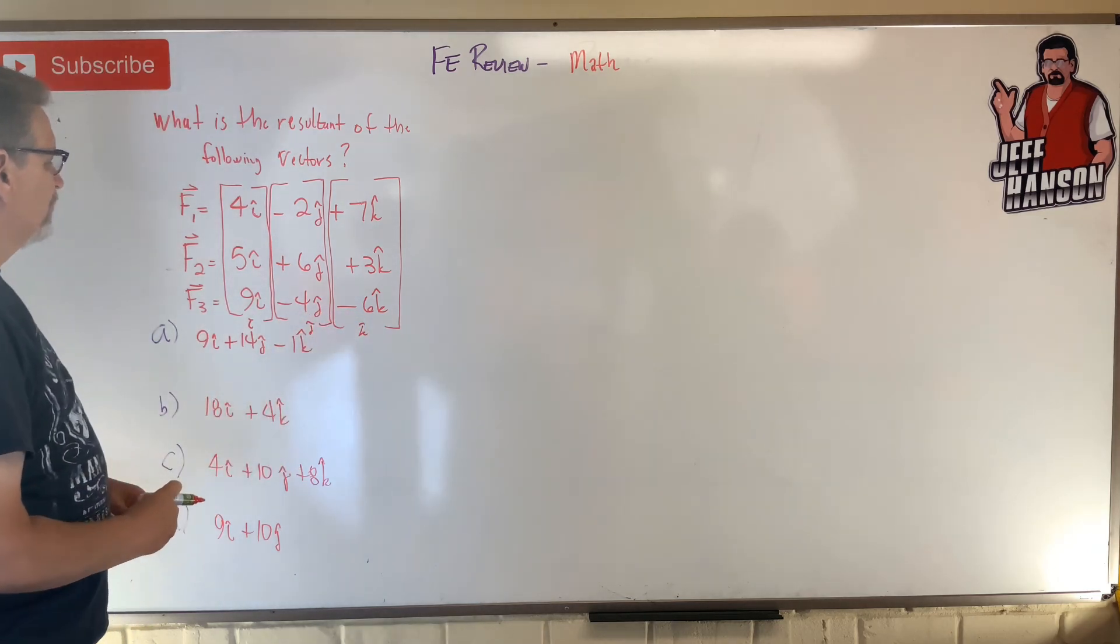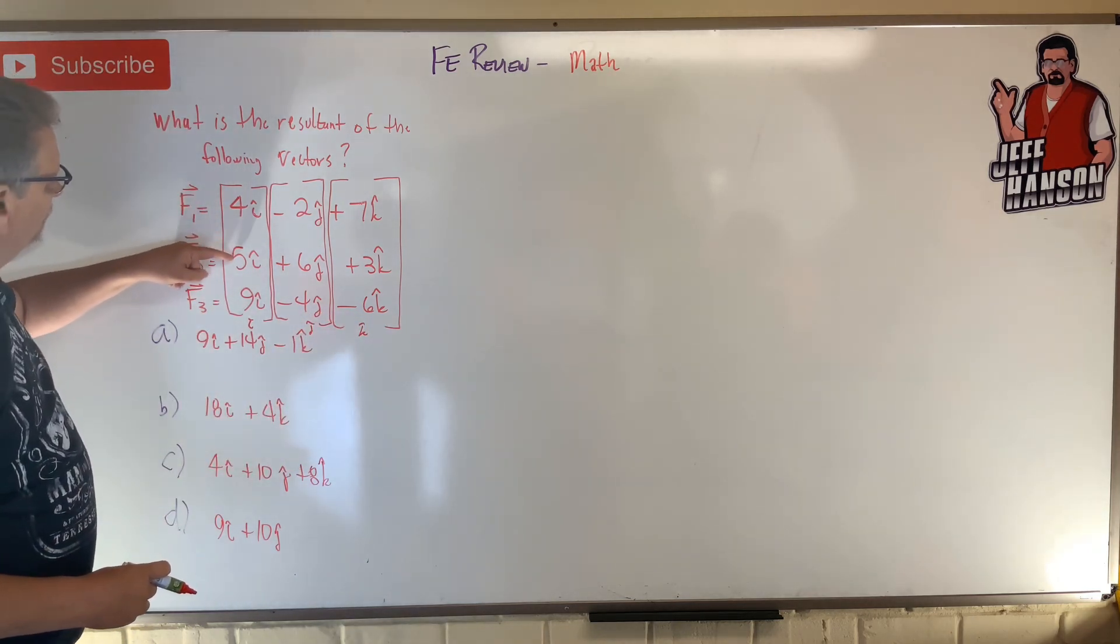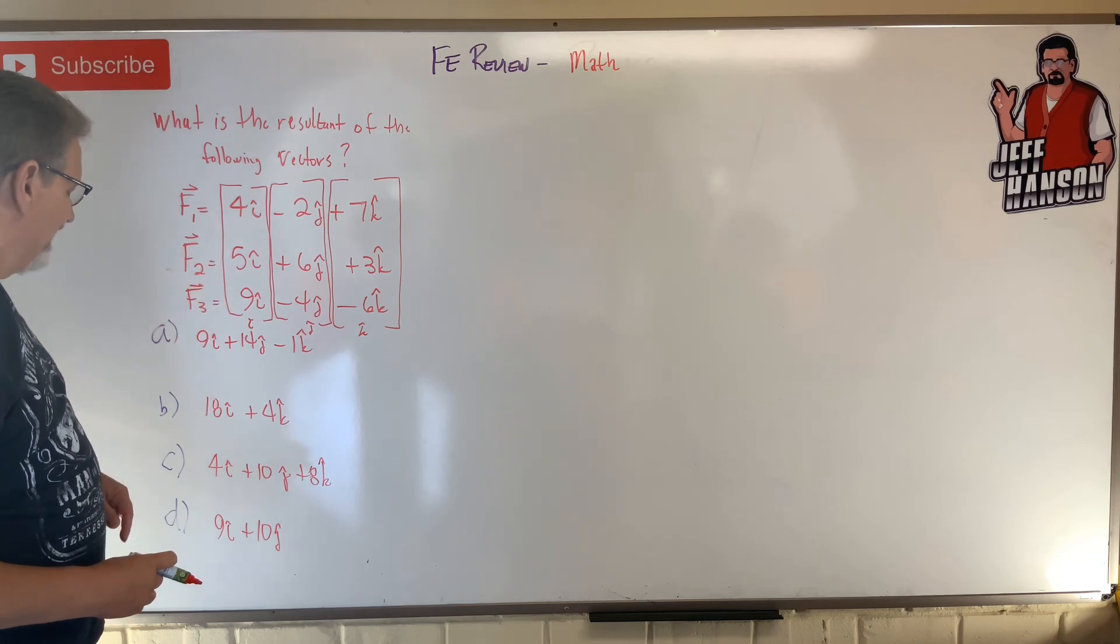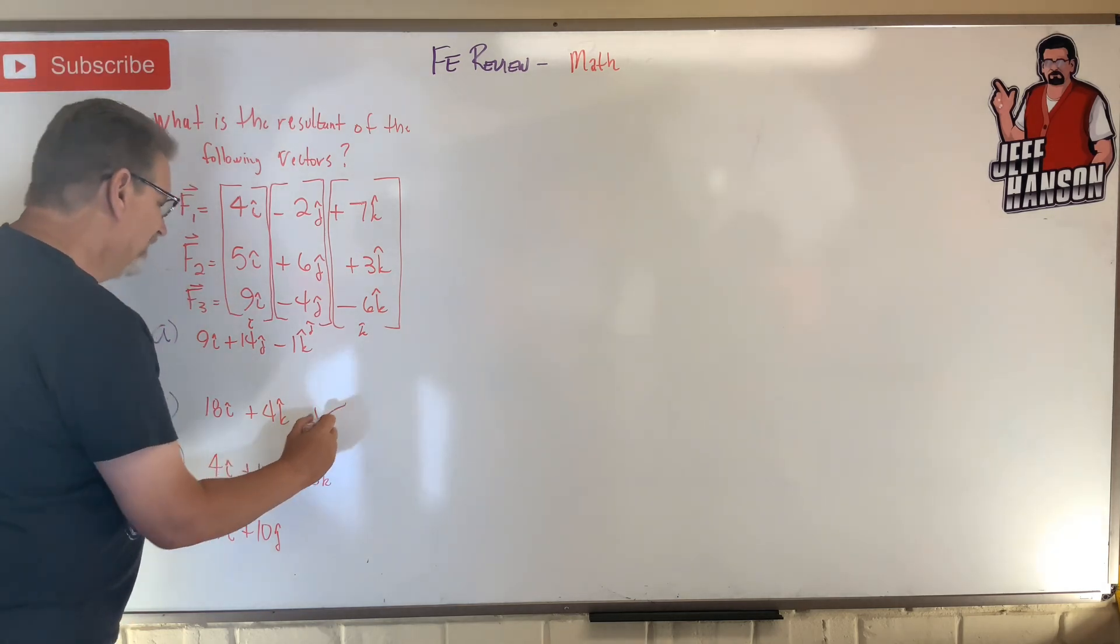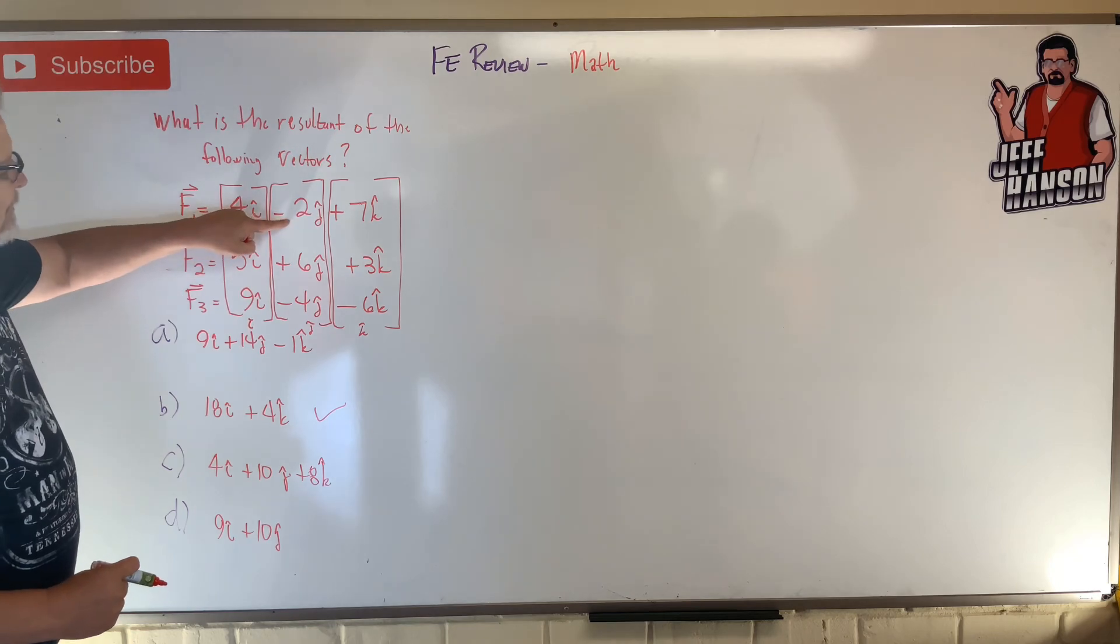So i-hat is 4 plus 5 is 9, plus 9 is 18. Oh, I think I know the answer. Bam, right! Minus 2.